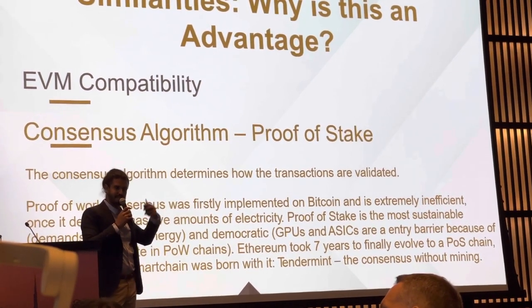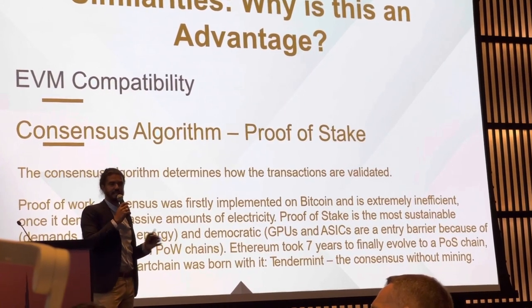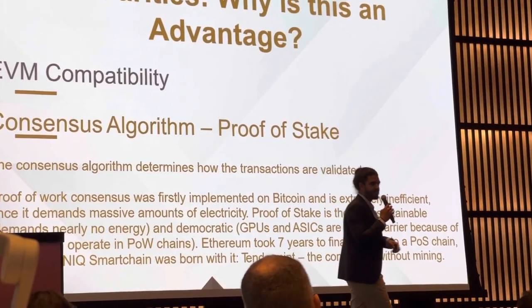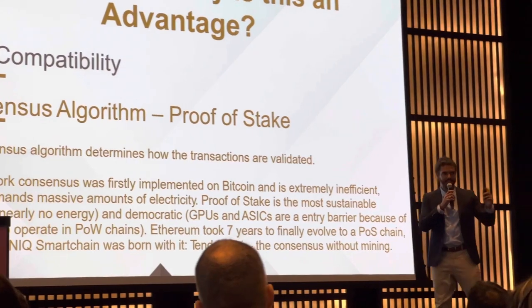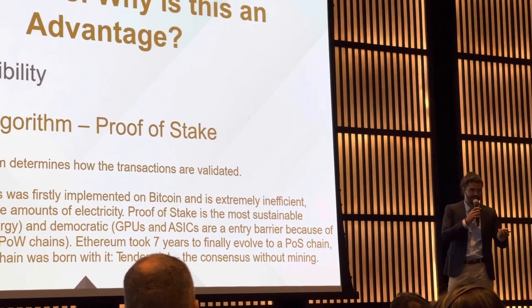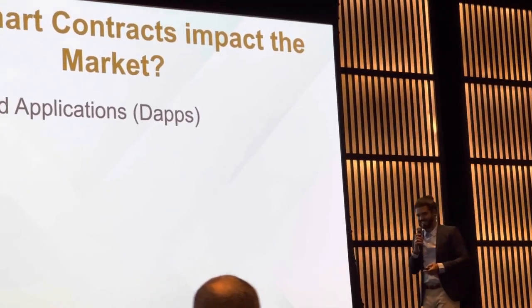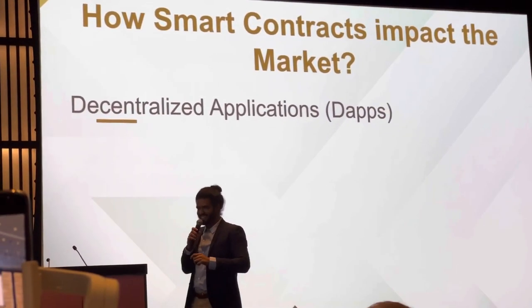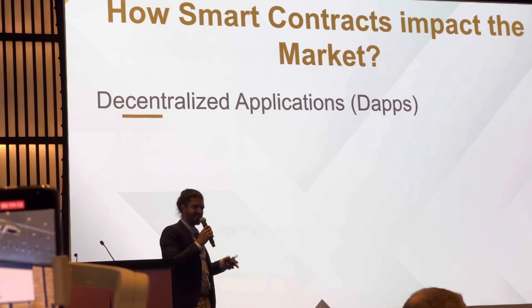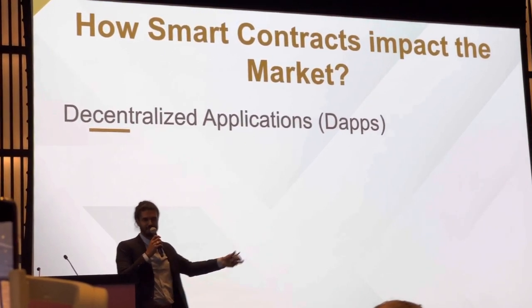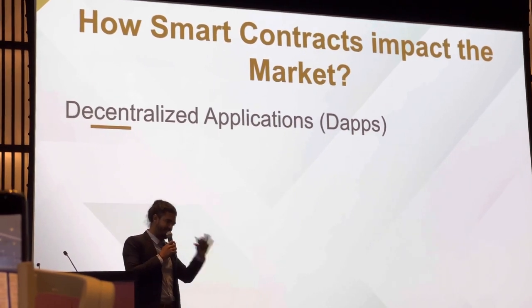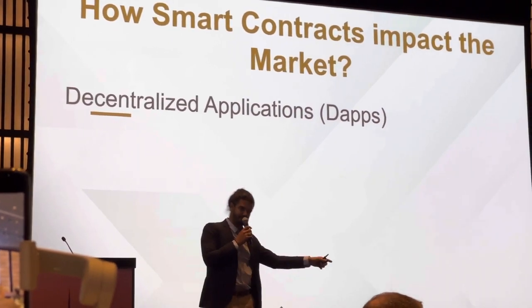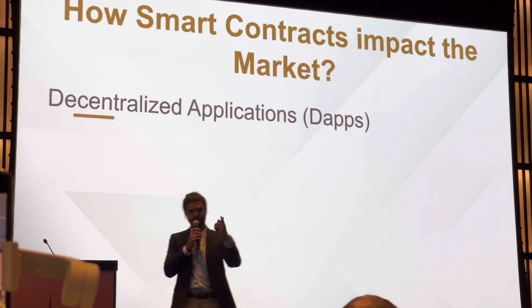Ethereum just changed from proof-of-work to proof-of-stake — instead of all that computer power and electricity being spent, it's now done in a more sustainable way. Ethereum took seven years to do this, but ZNIC Smart Chain was born with it. Learning from the mistakes of the original blockchain developers also benefits us. We can see what they did well and use it in our favor, and where they made mistakes, we learn from them and improve the ZNIC Smart Chain.